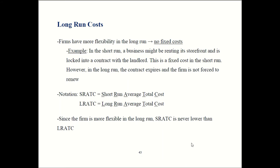We have a lot of abbreviations in this chapter, so now we're going to add two more. SRATC is Short Run Average Total Cost. Similarly, LRATC is Long Run Average Total Cost. Because the firm has extra flexibility in the long run and is not compelled to renew contracts for its rent, the Long Run Average Total Cost is never going to be above the Short Run Cost. At best, short run cost can equal long run cost if renewing that contract is still in the firm's best interest. If it's not, then the firm faces higher costs in the short run and lower costs in the long run.